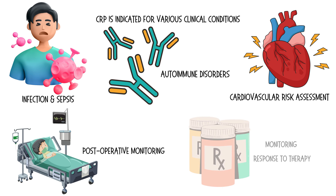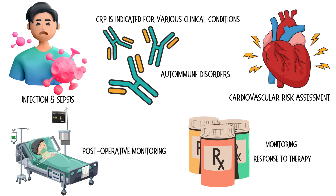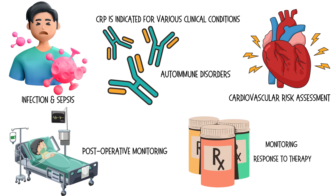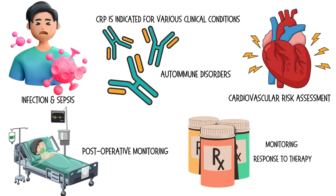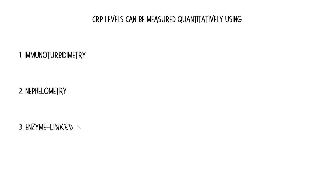CRP is also used for monitoring response to therapy in conditions like infection and inflammatory diseases. CRP levels can be measured quantitatively using methods such as immunoturbidimetry, nephelometry, and enzyme-linked immunosorbent assay, or ELISA.